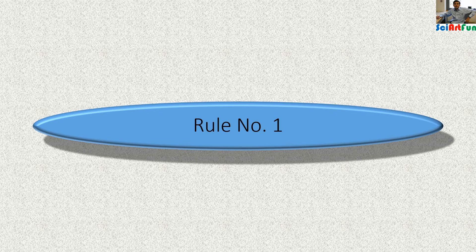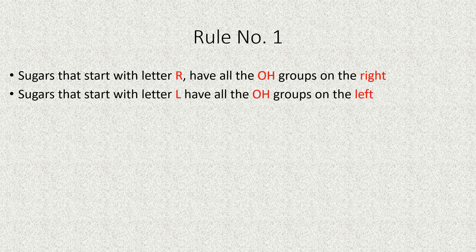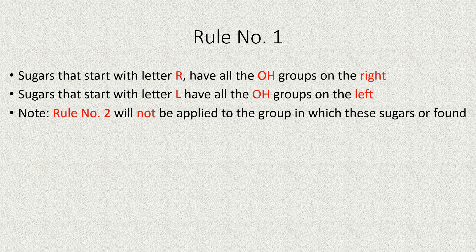Rule number one says that sugars starting with the letter R have all the hydroxyl groups on the right side, and sugars starting with the letter L have all the hydroxyl groups on the left side. By 'all the hydroxyl groups' I mean the fourth type of carbons, which are missing in triose sugars. Therefore, we don't need any mnemonics for triose sugars.